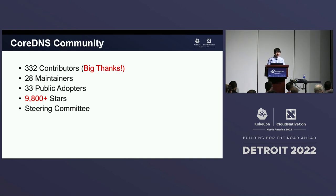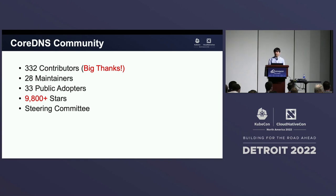Here's the summary of CoreDNS community progress. As of right now, we have 332 contributors — a big thank you to everyone who contributed to the CoreDNS repo. We also have 28 maintainers. I'm going to discuss about how to become a maintainer later on in this session. CoreDNS itself has a very flat structure. If you contribute enough, you can easily become a maintainer. I also encourage anyone who has an interest in DNS or Golang to give it a try. We have 33 public adopters — those are companies or institutions willing to share their name publicly.